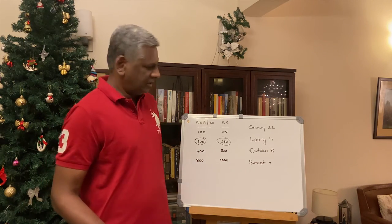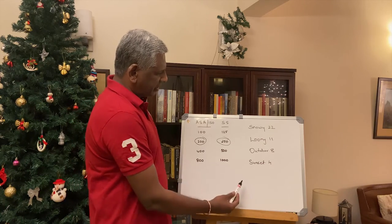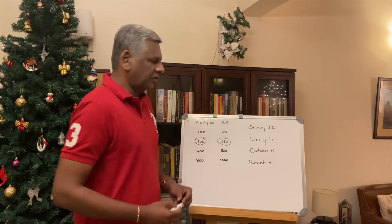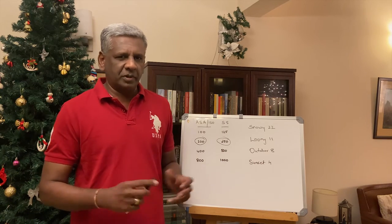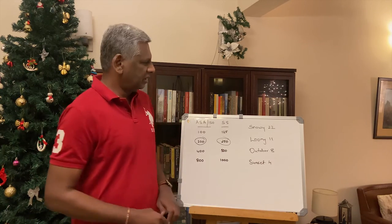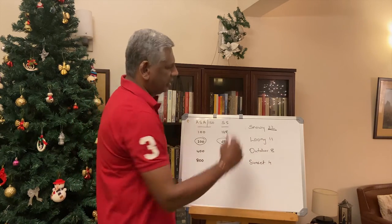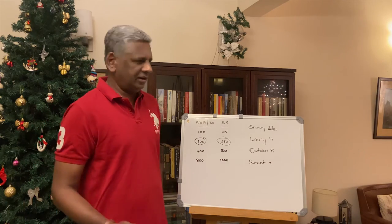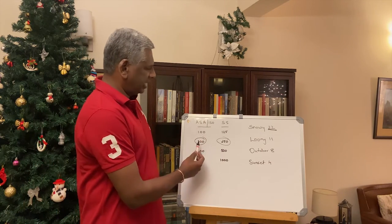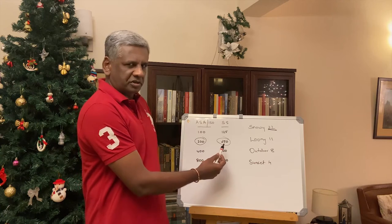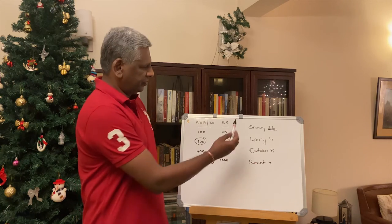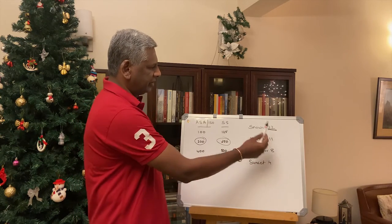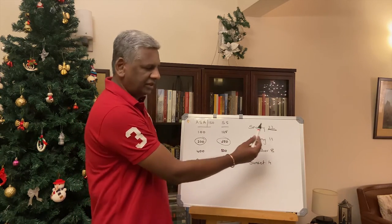Now we move to the apertures and the specific situations in which these apply. If we have a snowy scene — a snowy landscape with a lot of snow — we choose an aperture of 22. This is known as the Snowy 22 rule. So, for 200 ASA with corresponding shutter speed of 250, on a snowy day with a lot of snow on the ground and in the frame, you choose aperture 22.